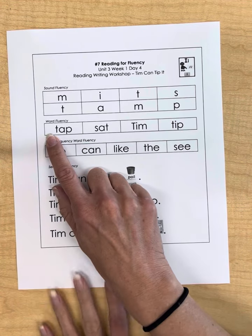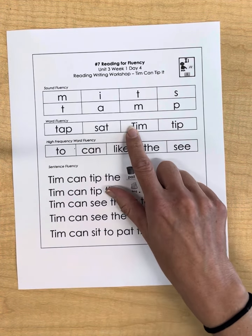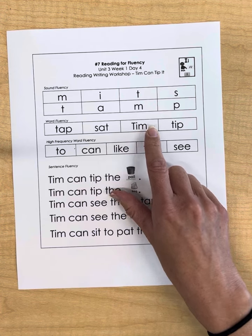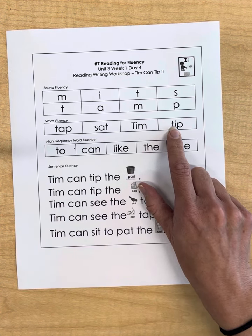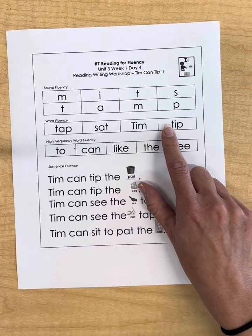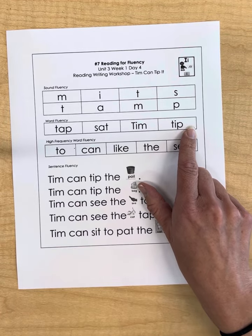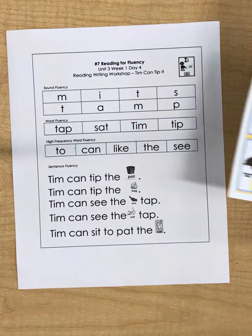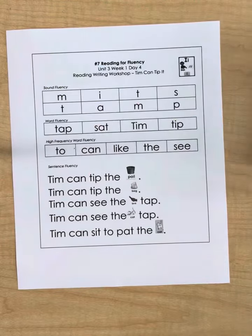Keep reading the words: tap, sat, tim. If they can't read the whole word, they read it sound by sound. Have them read it: T, it, tip. If they need any help, remember not to tell them the answer — refer them to this handy dandy chart.